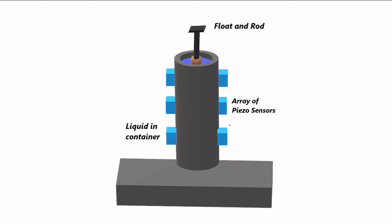For continuous level tracking, we have a series of piezoelectric sensors connected together, giving us the level at multiple points. Here I have only mentioned three sensors, but it can be 5, 10, 15, or 20 depending on the height of the container. All these piezo sensors are placed at fixed separation gaps — for example, at y = 0 m, y = 5 m, y = 10 m, and so on — giving us the level of the liquid continuously.